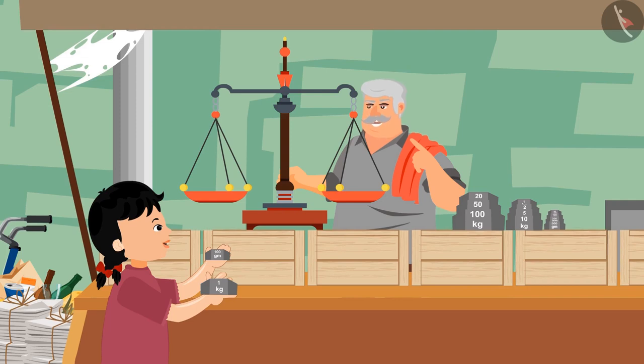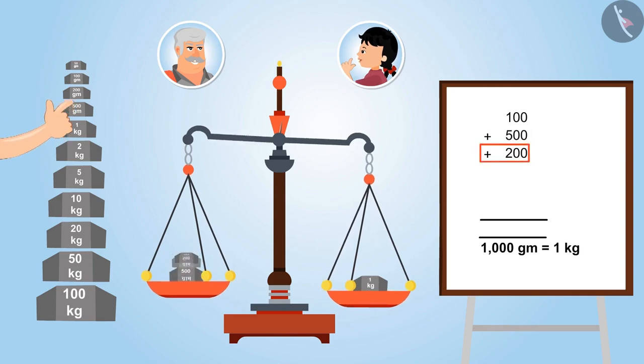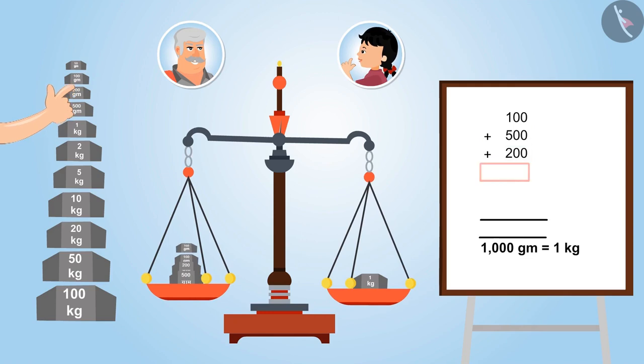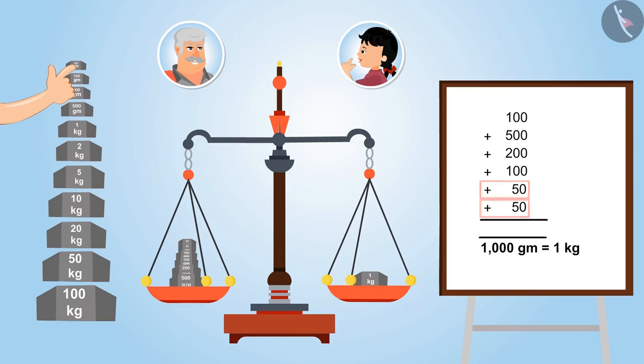Right. Now place some more weight on the side carrying 100 grams, so that it becomes equal to 1000 grams and the scale gets balanced. Okay uncle, to this 100 grams, I am adding 500 grams, then 200 grams, then 100 grams and the last 2 stones of 50 grams each. Yes, yes. Now the total is 1000 grams. Look uncle, the scale is now balanced.